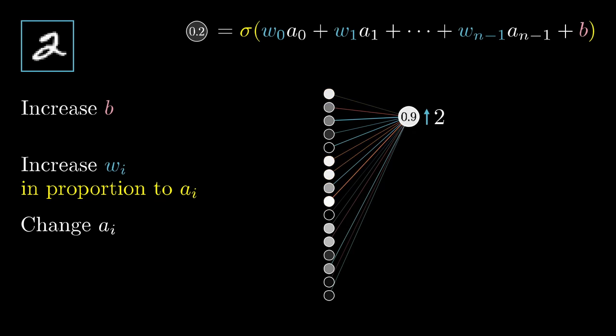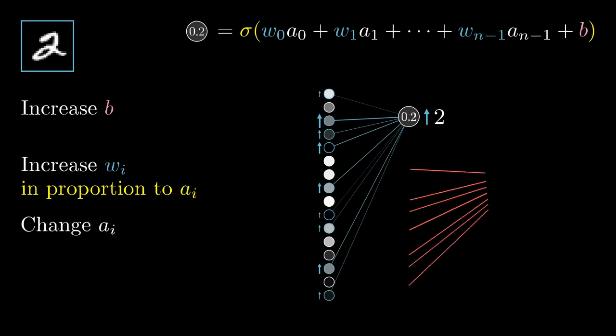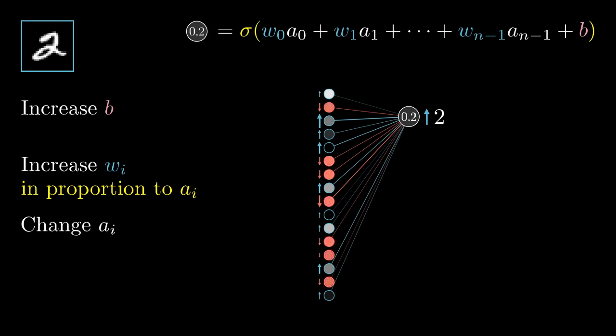Anyway, the third way that we can help increase this neuron's activation is by changing all the activations in the previous layer. Namely, if everything connected to that digit 2 neuron with a positive weight got brighter, and if everything connected with a negative weight got dimmer, then that digit 2 neuron would become more active. And, similar to the weight changes, you're going to get the most bang for your buck by seeking changes that are proportional to the size of the corresponding weights.